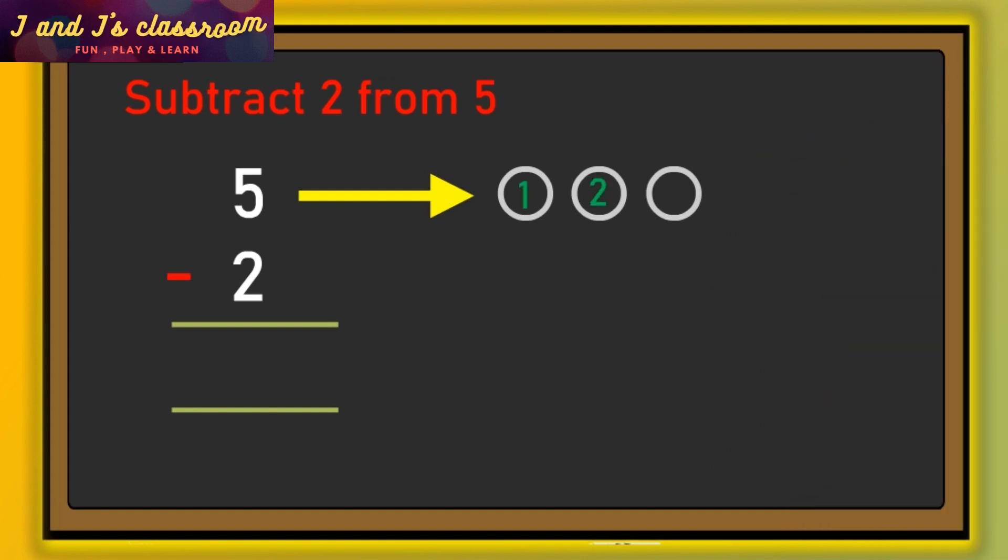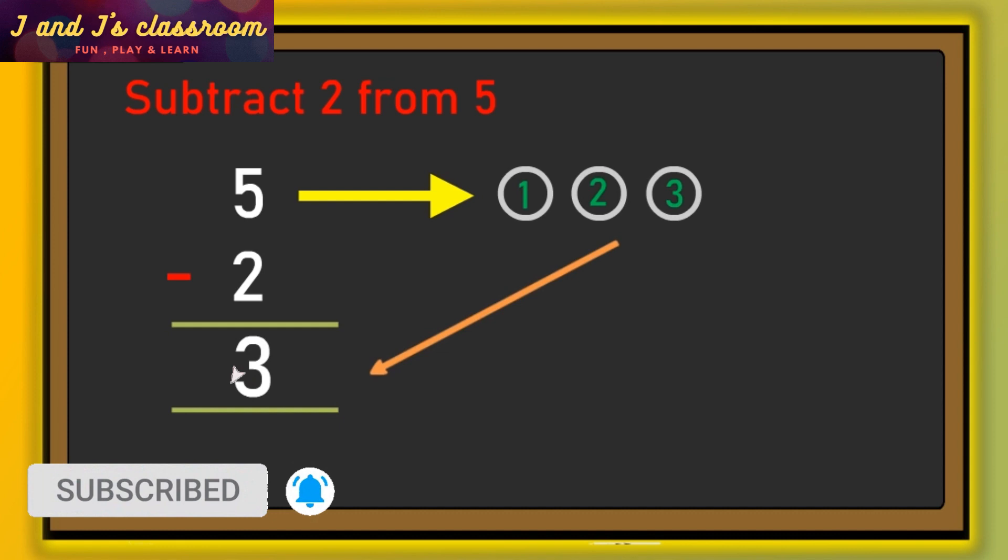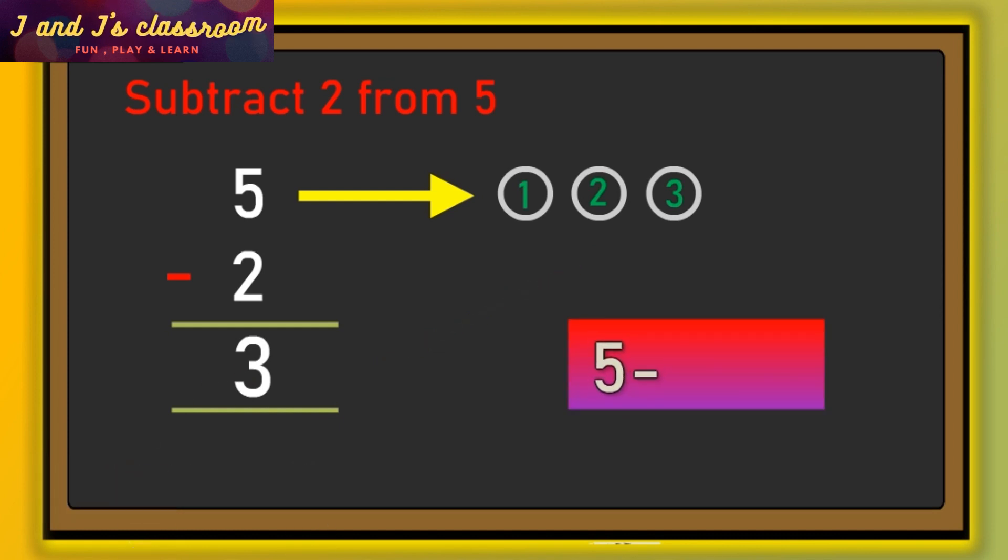Then count the remaining circles: one, two, three. Yes, of course, three is the answer. So when we subtract two from five, we get the answer three. That is the difference between five and two.